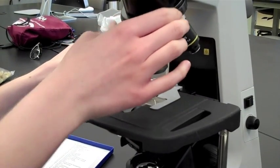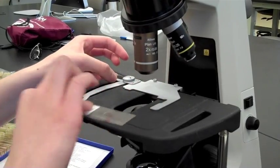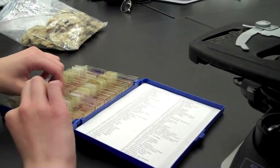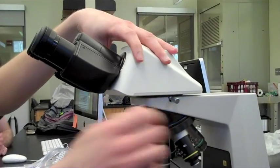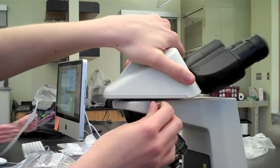Adjust the objective lens and the stage so you can remove the slide and place it back into the box. Close the box. Rotate the eyepiece back over the microscope.